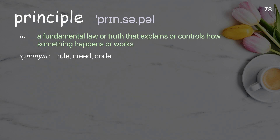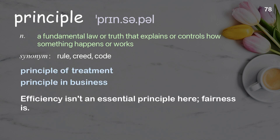Principle: a fundamental law or truth that explains or controls how something happens or works. Examples: principle of treatment, principle in business. Efficiency isn't an essential principle here; fairness is.